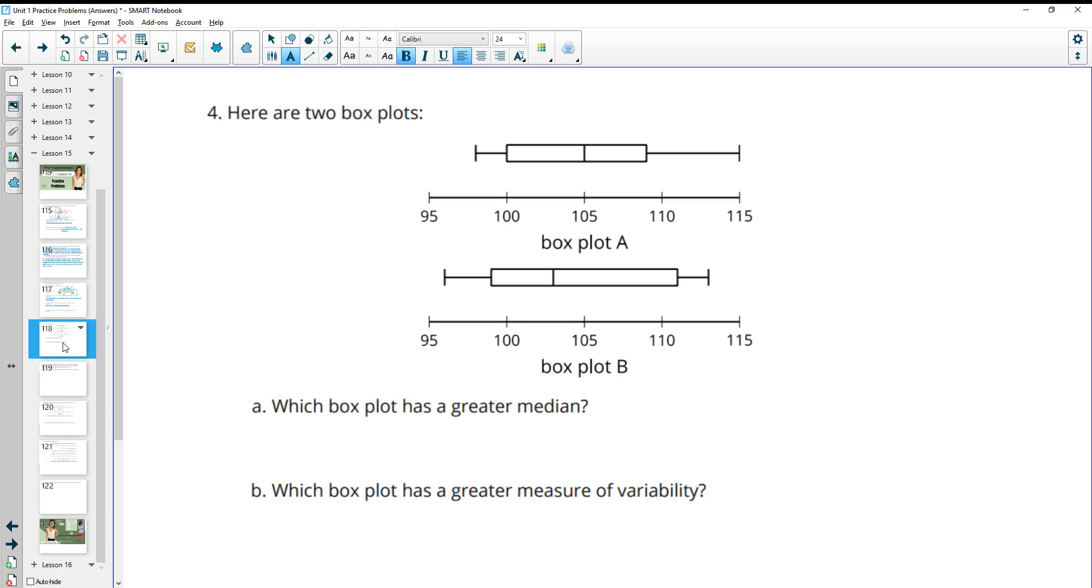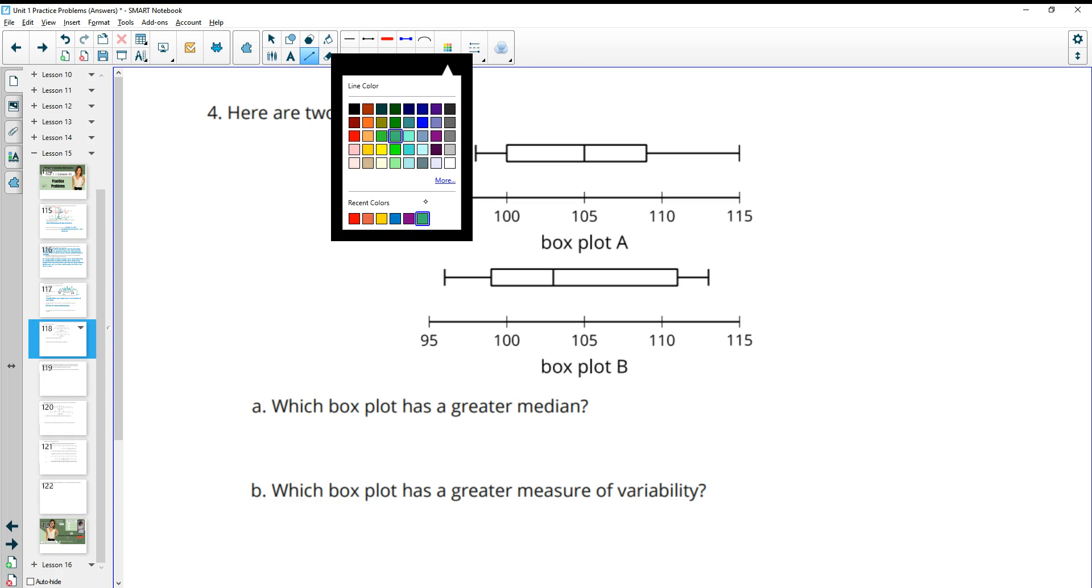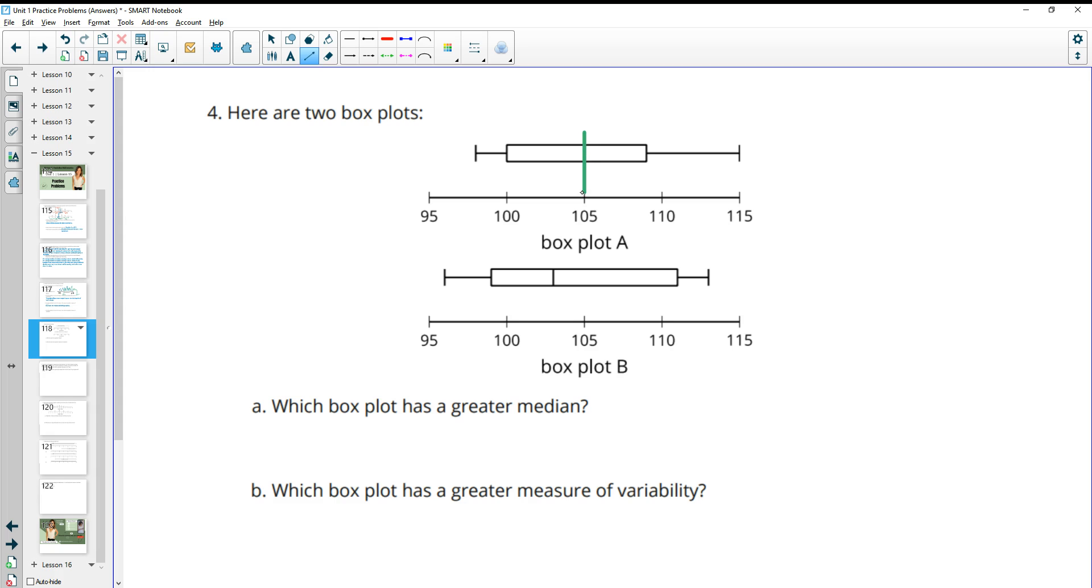Number four, here are two box plots. Which box plot has a greater median? Remember the median is the middle of that box. So we can see that the median in this one is 105 and the median in this one is between 100 and 105. So that means that the median in box plot A is greater.